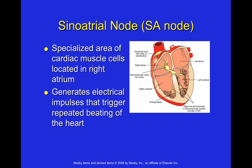The sinoatrial (SA) node is a specialized area of cardiac muscle cells located in the right atrium. It generates electrical impulses that trigger repeated beating of the heart — essentially the body's natural pacemaker. When electrical conduction is disrupted, conditions like atrial fibrillation or ventricular fibrillation can occur, causing the heart to beat rapidly and erratically. In those cases, a mechanical pacemaker is implanted to replicate the SA node's function.